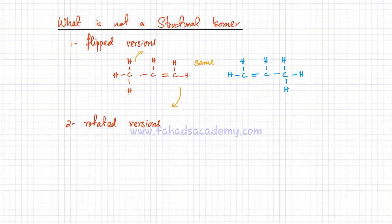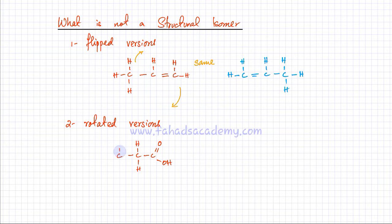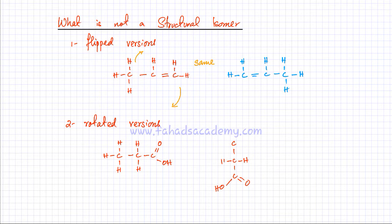The second thing that doesn't make two molecules isomers of each other is if they are rotated versions of the same thing. For example, I have propanoic acid with a carboxylic acid functional group and hydrogen atoms. If I rotate this molecule 90 degrees, all the carbon atoms would be aligned vertically with the double bond O and OH group, and all atoms attached are hydrogen.